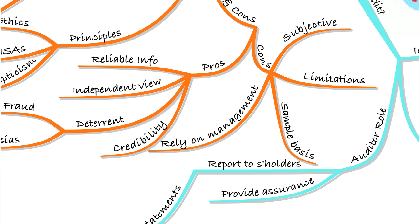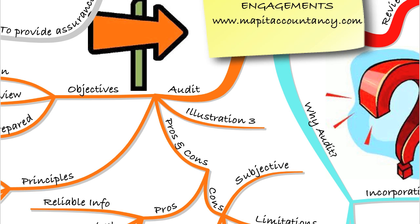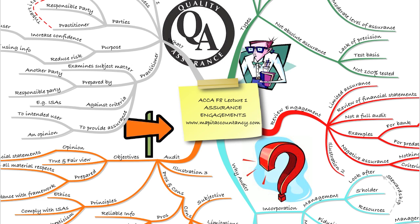We then looked at illustration three to see how all of that is applied in the exam. So that was our first lecture on assurance engagements. If there was anything you were unsure of, go back and make sure you go over it. If you want this mind map, go to the website — you can download it for free there.